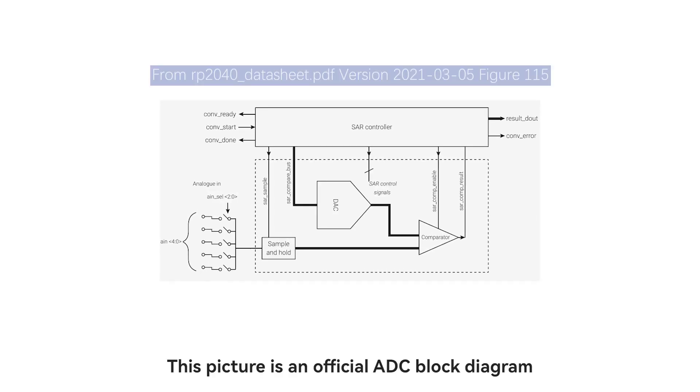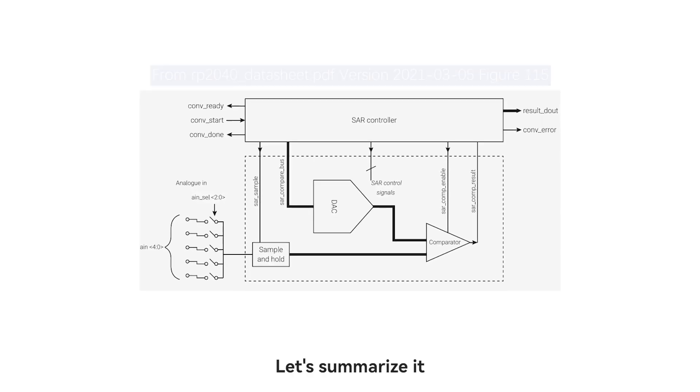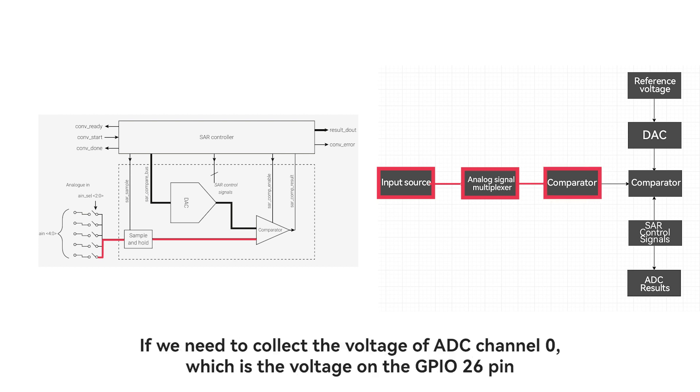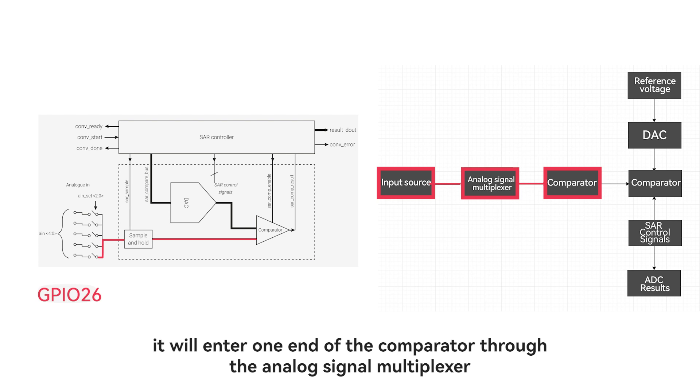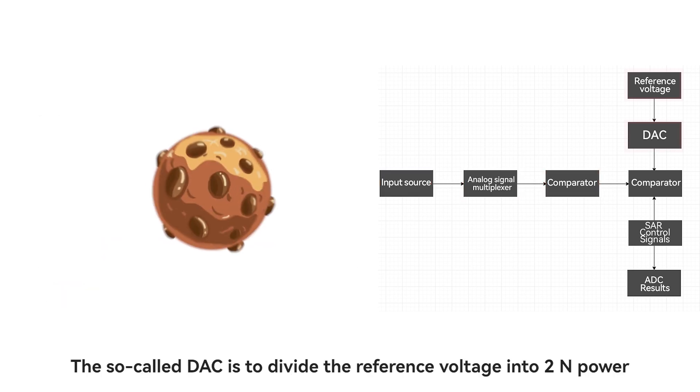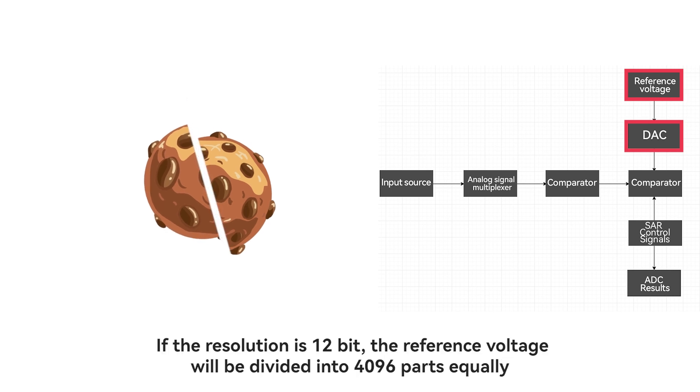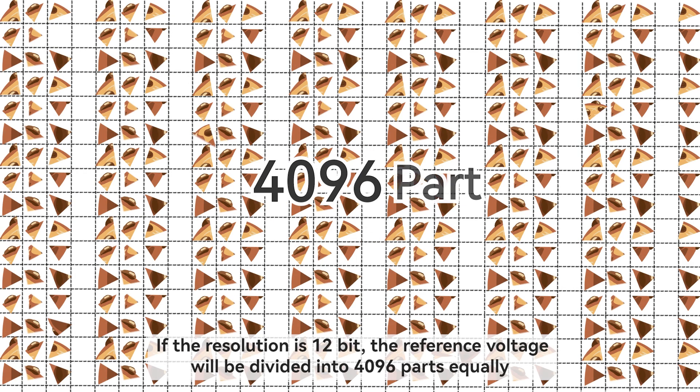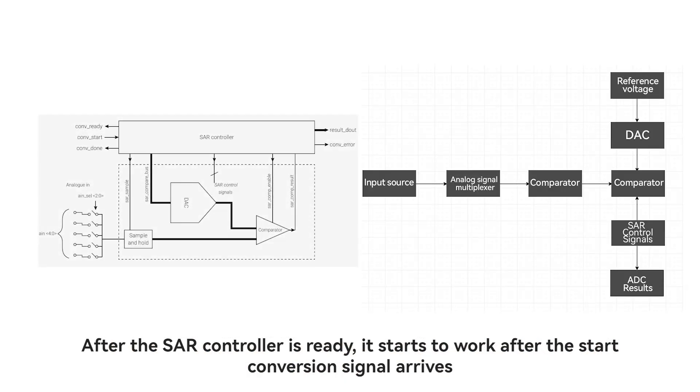This picture is an official ADC block diagram. Let's summarize it. The general process of the ADC is that the analog signal enters one end of the comparator through the analog signal multiplexer. If we need to collect the voltage of ADC channel 0, which is the voltage on the GPIO 26 pin, it will enter one end of the comparator through the analog signal multiplexer. The so-called DAC is to divide the reference voltage into 2 to the power of n. If the resolution is 12-bit, the reference voltage will be divided into 4096 parts equally.